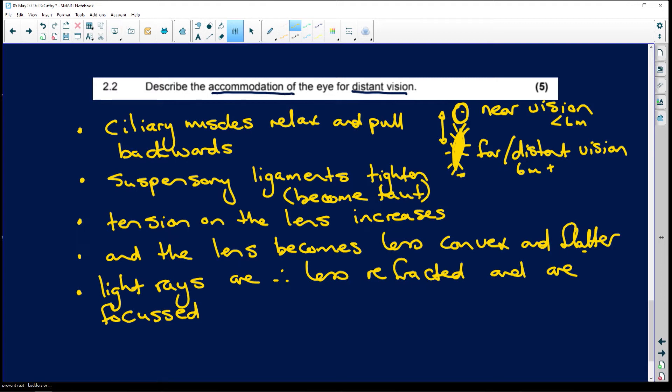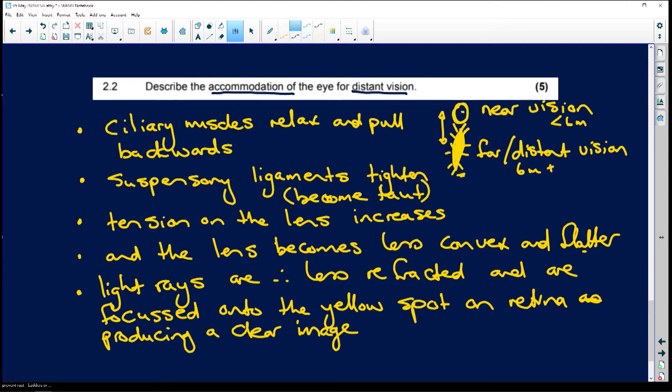So the lens is focused onto the yellow spot on the retina, producing a clear image. Because remember, your yellow spot is your focal point. OK?